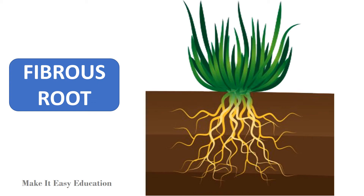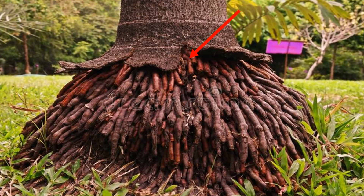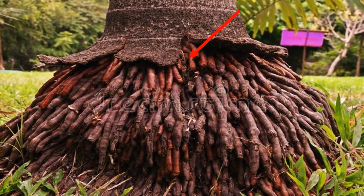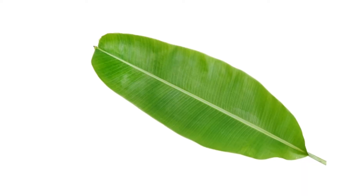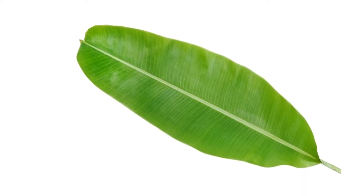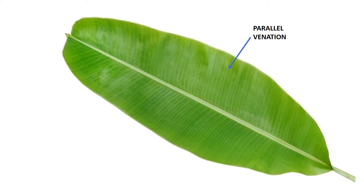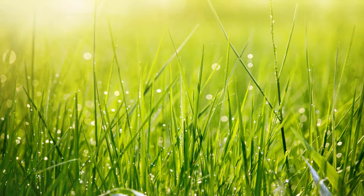A fibrous root consists of groups of roots of similar size and length. It is usually formed growing from the stem. Plants with parallel venation leaves have fibrous roots.